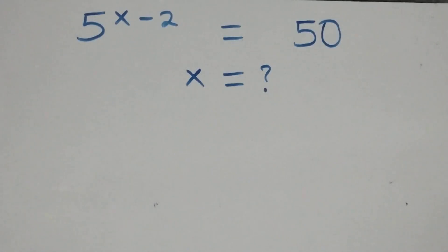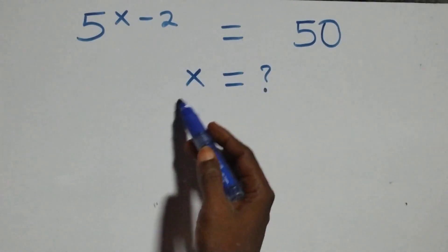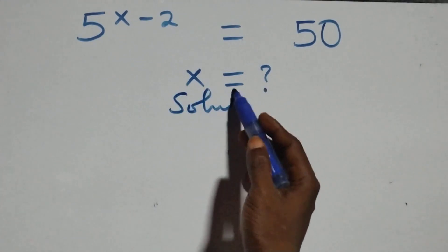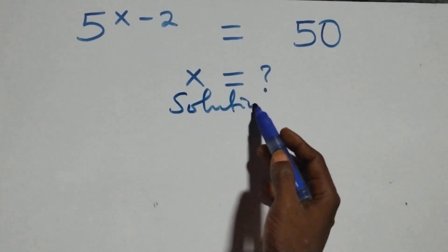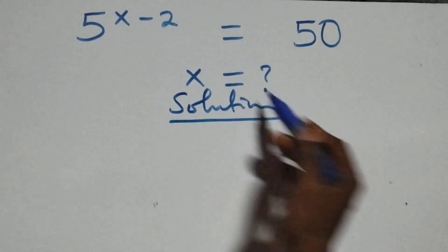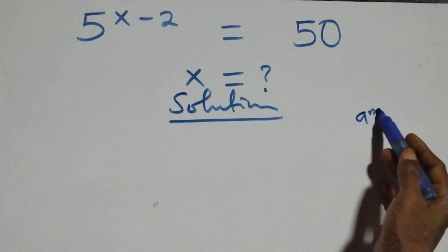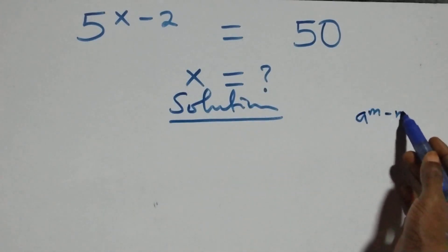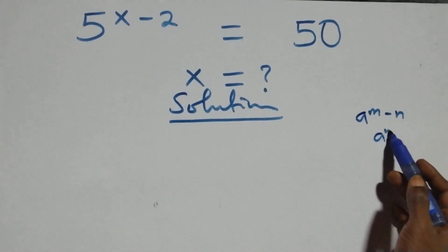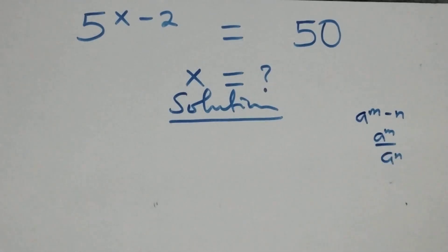Hello, you're welcome. How to solve this nice exponential equation. What we have here follows when we have a raised to power n minus n, this is the same thing as a raised to power n over a raised to power n.